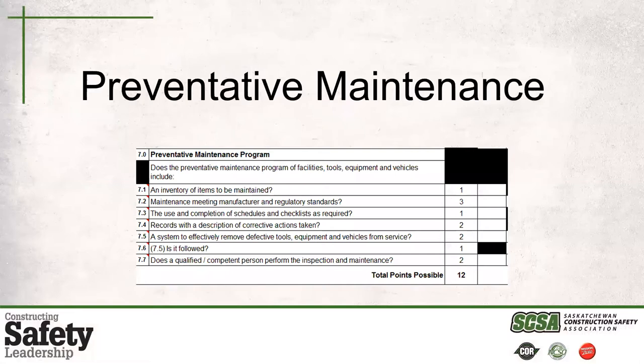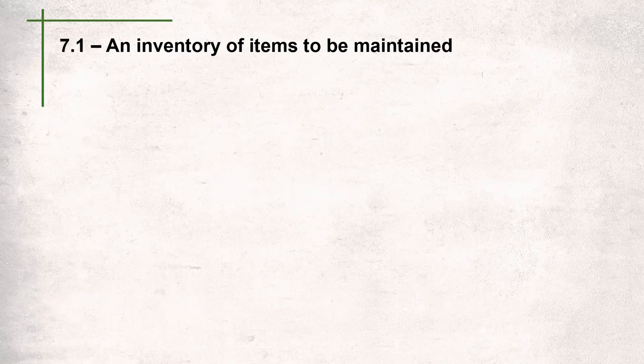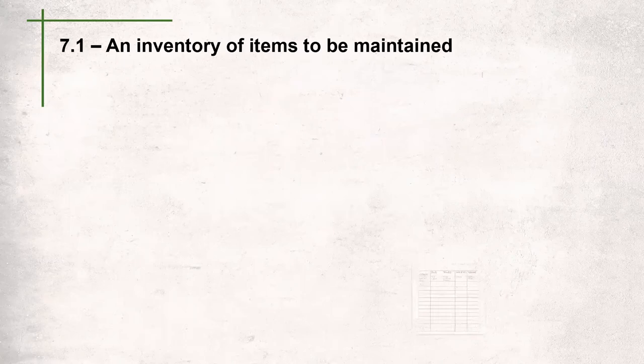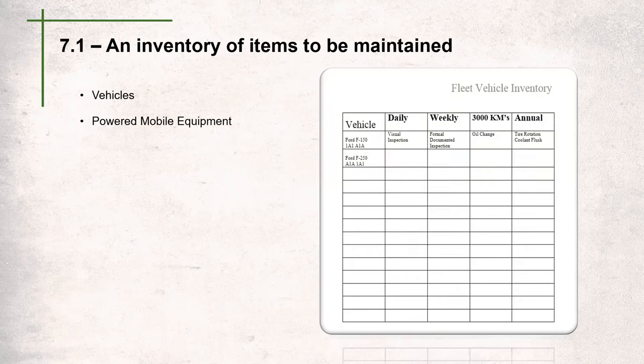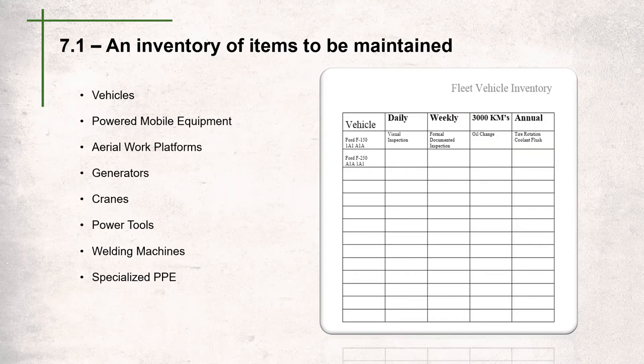Now we'll jump into the last section: preventative maintenance. This section has seven questions for a total of 12 points. The first question is: is there an inventory of items to be maintained? This is a low-hanging fruit — it's easy to put together a list. Inventory lists can include vehicles, powered mobile equipment such as excavators, dozers, and bobcats; aerial work platforms like boom lifts or JLGs; generators, cranes, power tools, welding machines, specialized PPE, and fire extinguishers. In this example, the company has a list of all fleet vehicles with daily, weekly, kilometer, and annual inspections.